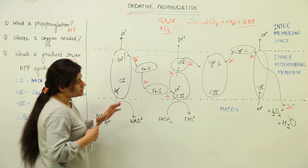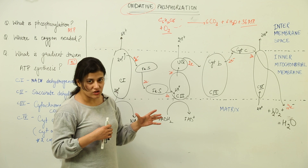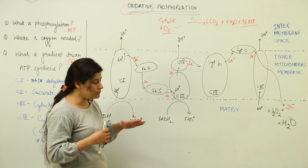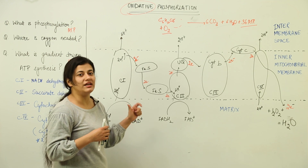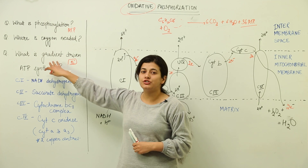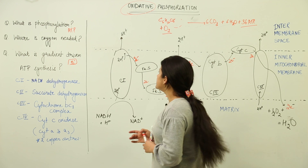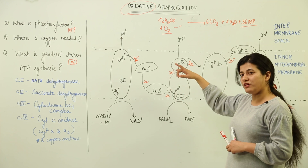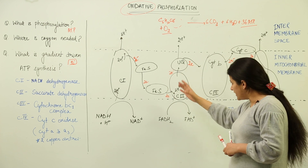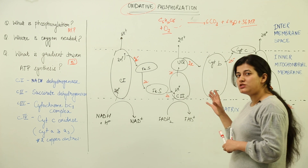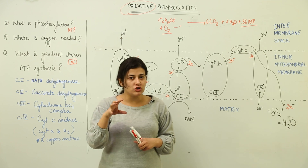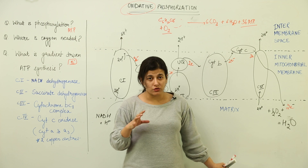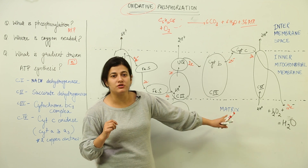There are a few complexes present in the inner mitochondrial membrane. You need to remember them by their numbers and names and understand their role in gradient-driven ATP synthesis. This entire process is also known as the electron transport system, because electrons move from one acceptor to the next, ultimately reaching oxygen, enabling oxygen to take up protons and form water.